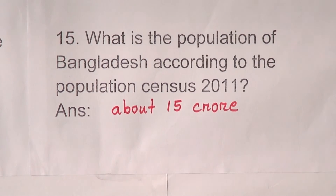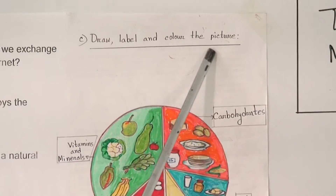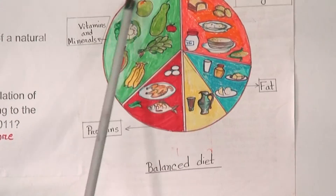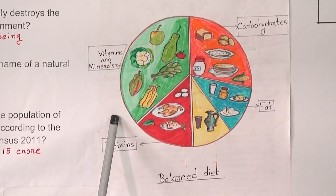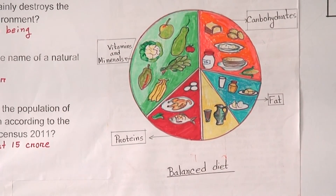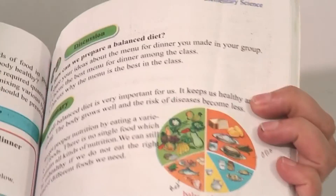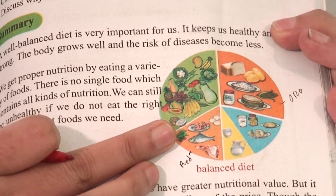Now dear students, we will discuss draw, label and color the picture. You can see here is a balance diet chart. You have to draw this picture first in your science book, page number 47. Look at page 47 — here is the picture you have to draw.